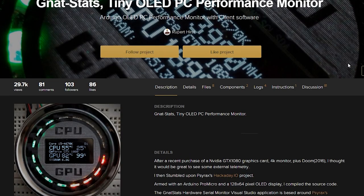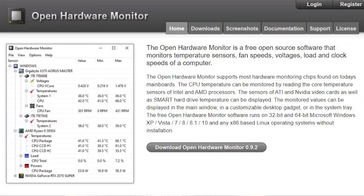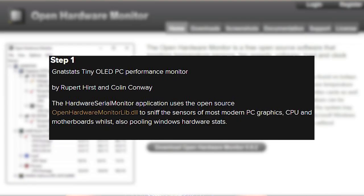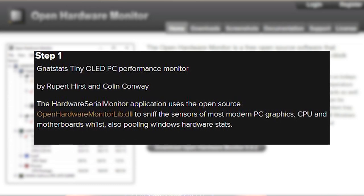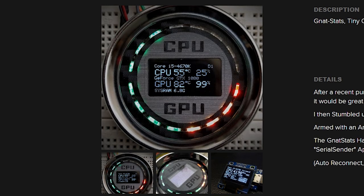So why would I create this whole video guide if I told you not to follow it? Because I discovered a better way of doing this project. Unfortunately, I was more than halfway through the project before I discovered it. NatStats is a PC performance display tool based upon Cyrax's serial sender application. I have no idea who that is, but you can read all about it on Hackaday. It uses the Open Hardware Monitor library, which quote, sniffs out your CPU, GPU, and motherboard signals while pooling your Windows hardware stats. It then takes those stats and displays them on your OLED screen via the USB. Let me know in the comments section if that's a project you'd like to see. I might consider trying it.